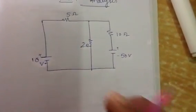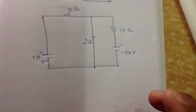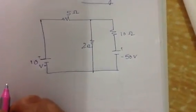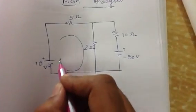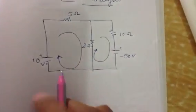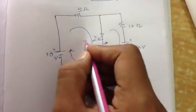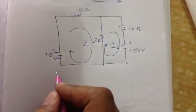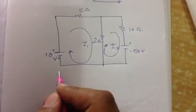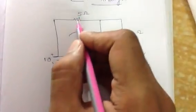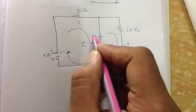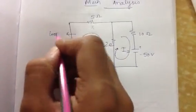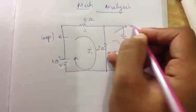So let us now find out how to write the mesh equations for this circuit. Let us assume the direction of current in this manner from both the meshes, from both the loops. Let's call this I1 and let's call this I2. This is loop 1 and this is loop 2.